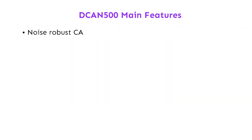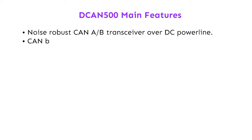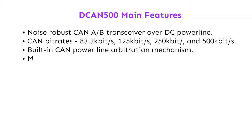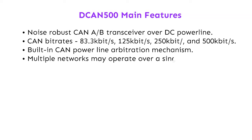Main features: noise robust CAN A/B transceiver over DC powerline. CAN bitrates 83.3 to 500 kilobits per second. Built-in CAN powerline arbitration mechanism.